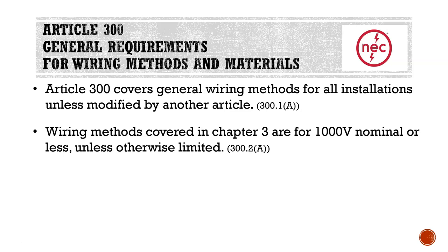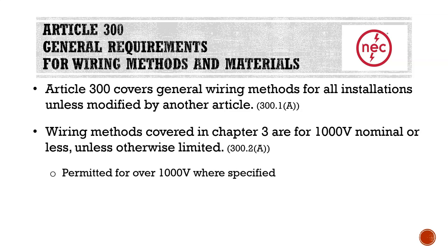Wiring methods covered in Chapter 3 are for 1,000 volts nominal or less, unless otherwise limited. This applies to all the different wiring methods in Chapter 3 — whether it be AC cable, MC cable, NM cable, EMT, RMC, or PVC — all are for 1,000 volts or less unless otherwise limited. We do have some wiring methods that may be limited to only 6,000 volts nominal or 240 volts nominal or less, and some that are permitted for over 1,000 volts where specifically stated.